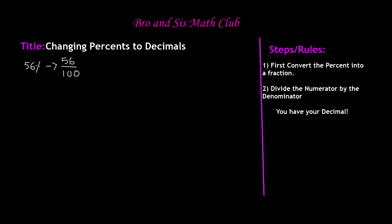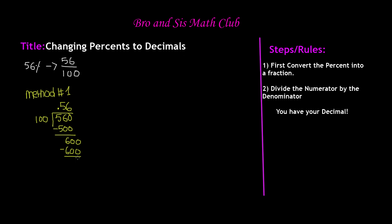There are two ways you can do this. Method one is long division. You take 56, which is your dividend, divided by 100, which is your divisor. Since 100 cannot go into 56, you add a decimal point and a zero. 100 goes into 560 five times, leaving 60. Add a zero to get 600. 100 goes into 600 six times, giving you the decimal 0.56.